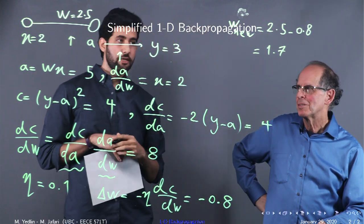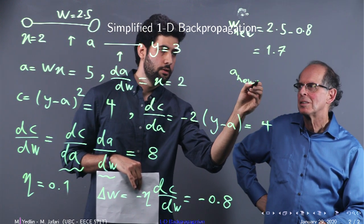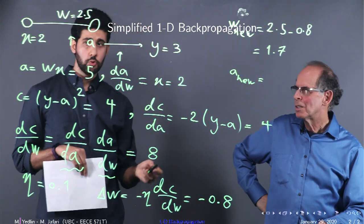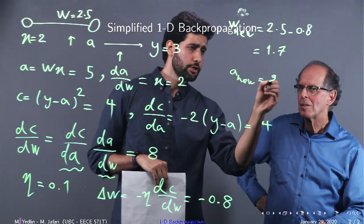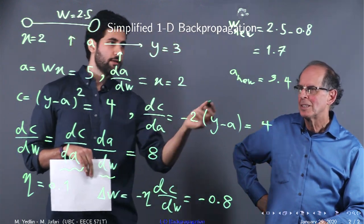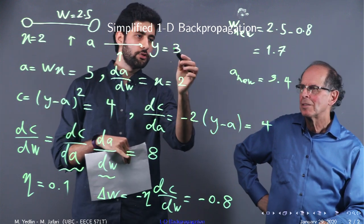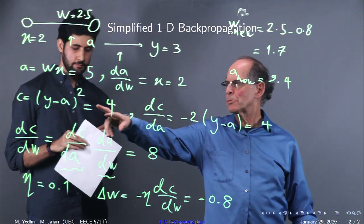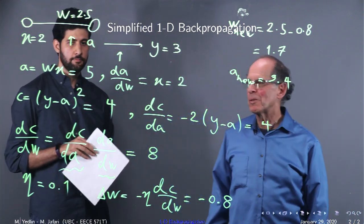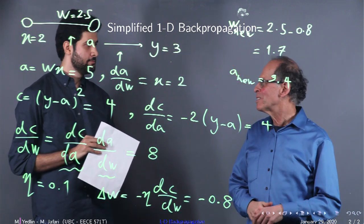And now let's see the effect. So, our new A would be 1.7 multiplied by 2, which would be 3.4. So, we can see that now, compared to the first one, now we get closer to Y. Yes. And in fact, when we subtract 3.4 from 3, it's 0.4 squared, so it's much smaller than 4. Much smaller. So, we can see how we descend.